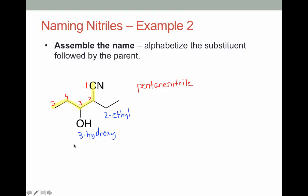Final thing we have to do is assemble our name. We'll alphabetize our substituents and follow it with a parent. Comparing E and H, E comes first. So we'll do 2-ethyl, then 3-hydroxy. And then our parent. We write that in and it's pentanenitrile. And there's no spaces in this name.